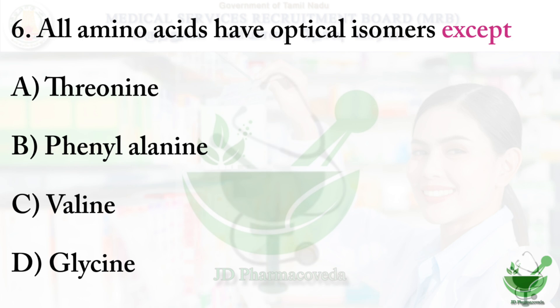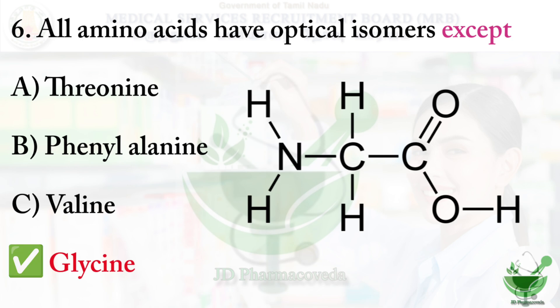Question number six: all amino acids have optical isomers except — option A: serine, option B: phenylalanine, option C: valine, option D: glycine. The correct option is option D, glycine. Optical isomers are two compounds that contain the same number and kinds of atoms and bonds but have non-superimposable mirror images.